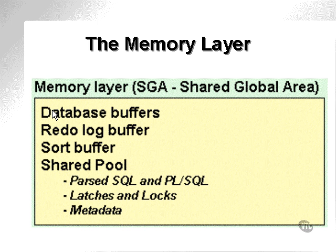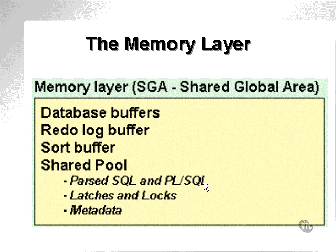The database buffer contains the in-memory portion of the database files, or the actual data. The redo log buffer contains a record of changes to the database buffers and the database files. After a period of time or other various parameters such as the amount of information changed, the redo log buffer will be written to a redo log file on the disk. Additionally, redo log files can be written to archive logs, which is a history of redo log files. The sort buffer is an area of memory reserved for sorting in memory. The shared pool is made up of pre-parsed SQL and PL/SQL code — meaning that the code has had its optimization plan stored in memory.